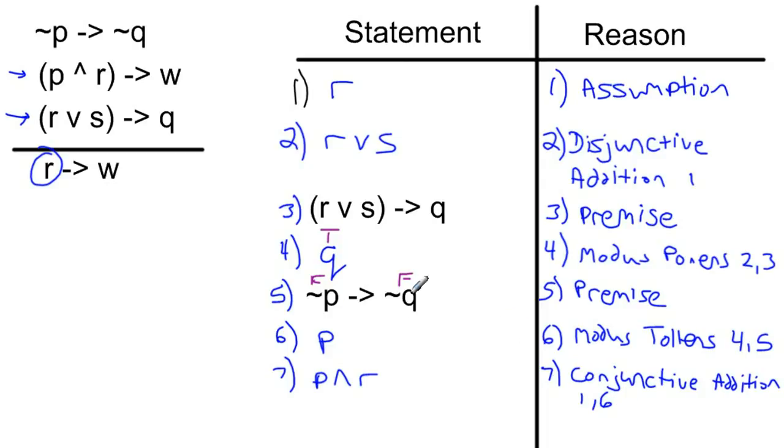So now that we have that conjunctive addition, now let's actually state that premise here. So now we're going to go ahead and paste this. You can say P and R implies W. So now we have P and R implies W. And obviously that reason is the premise again. So 8 here is just a premise. Some of you may write this as given.